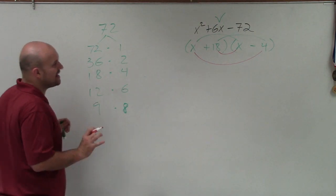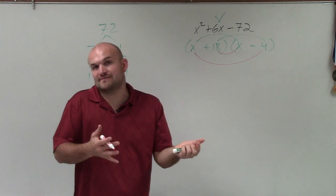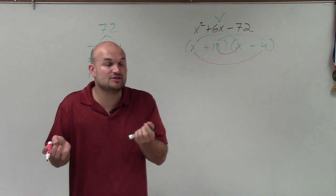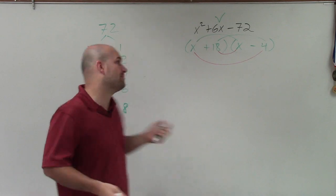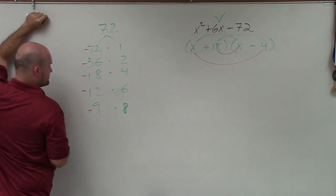Now, since 6x is positive, I know when I add a positive and a negative number, if I'm going to get a positive number out, that means the larger of the two numbers that I just added has to be positive. So I'm going to go through all of my factors and say all of the larger factors have to be positive.